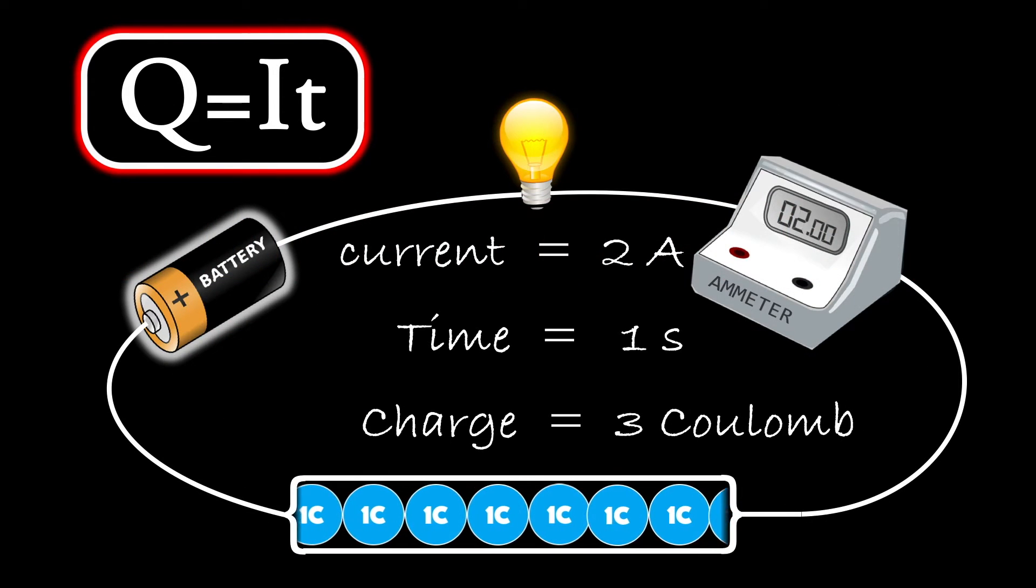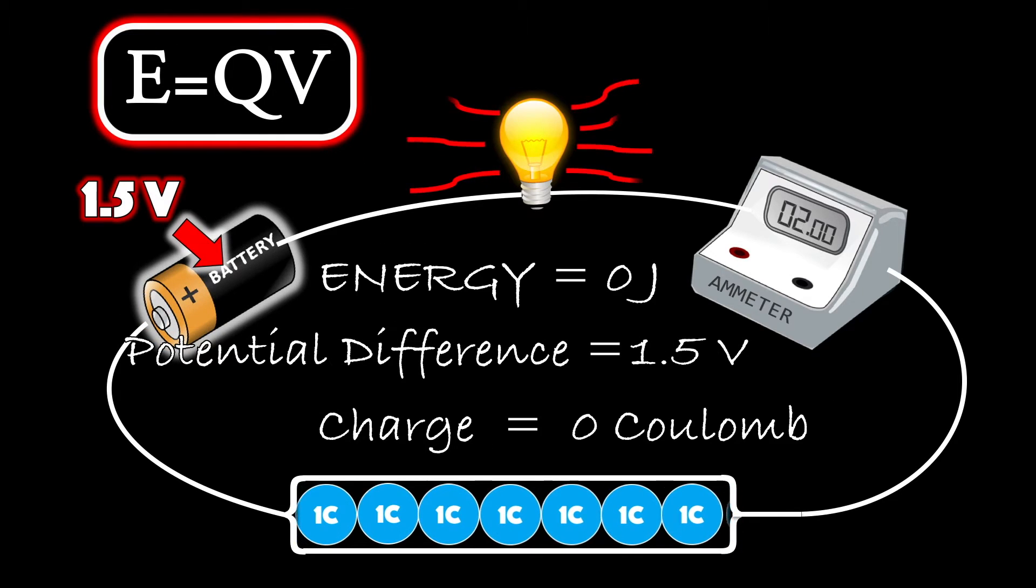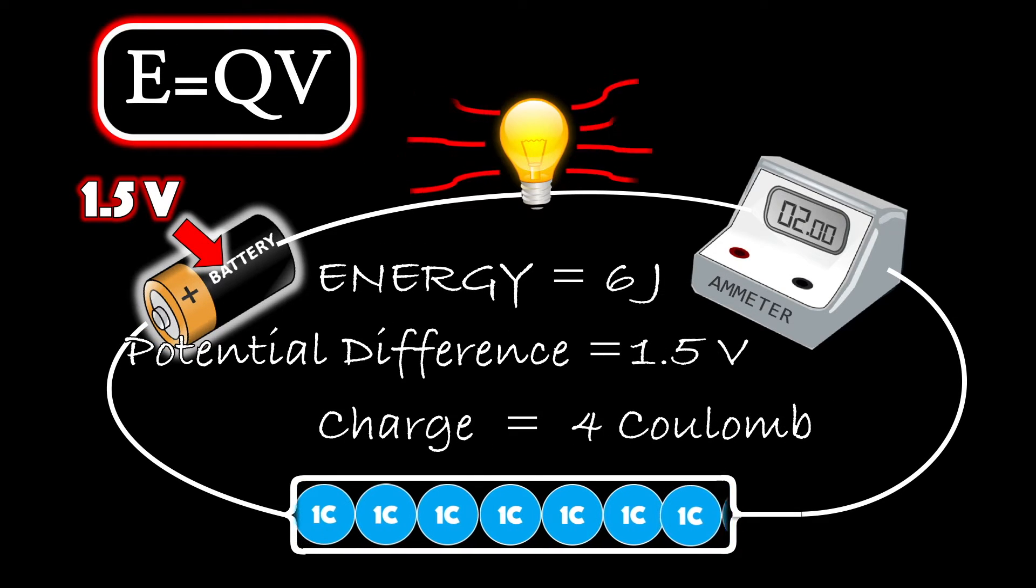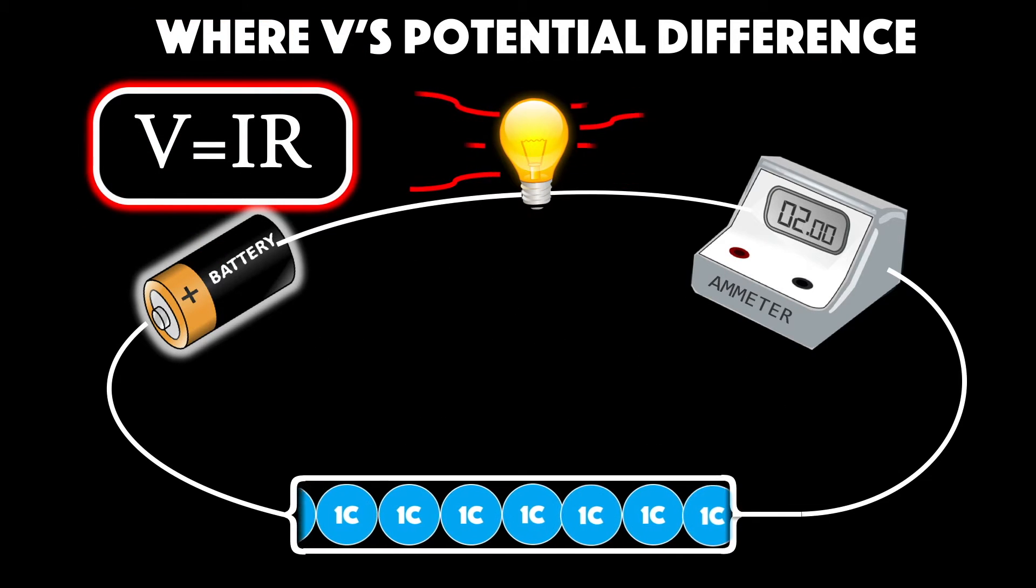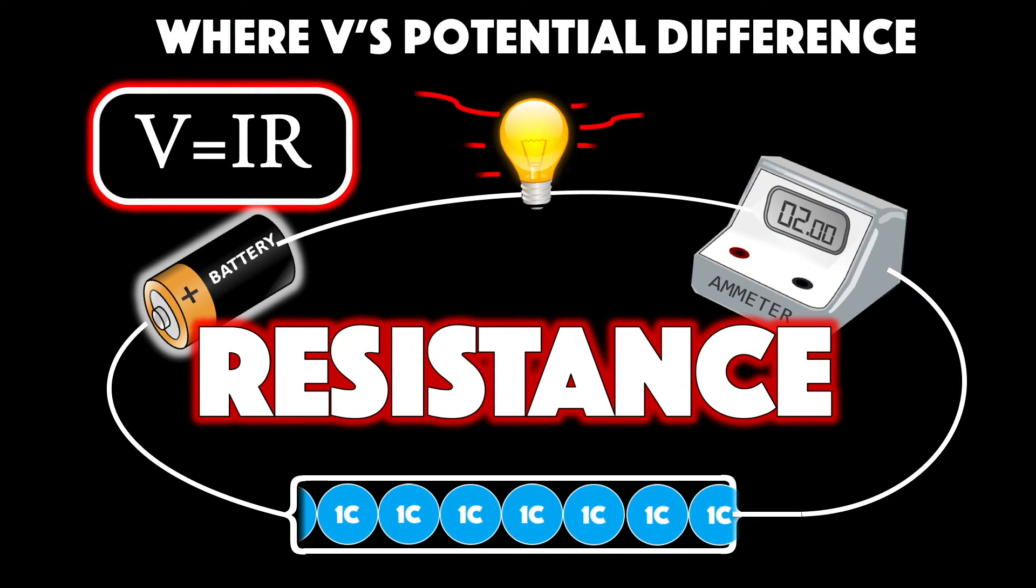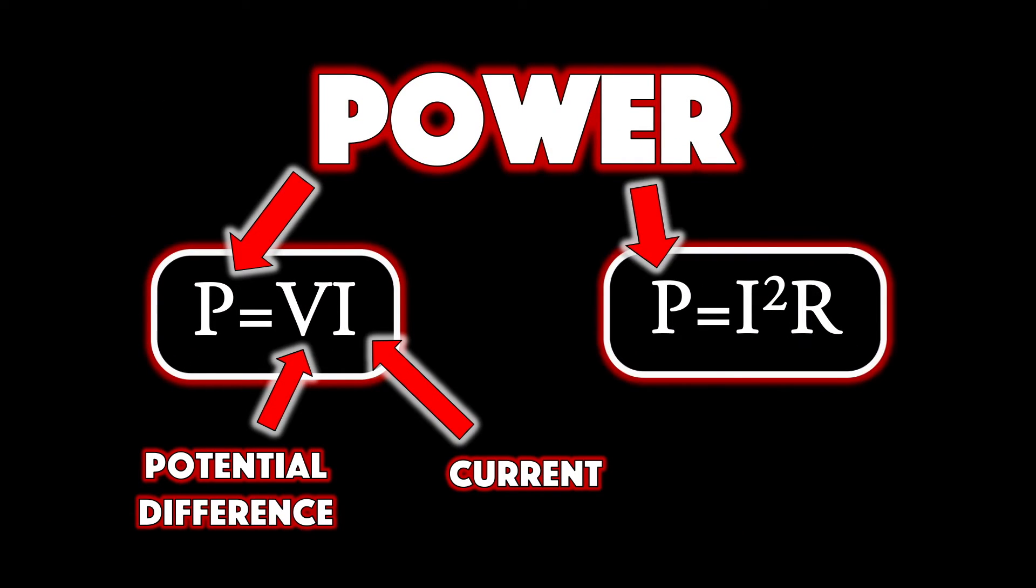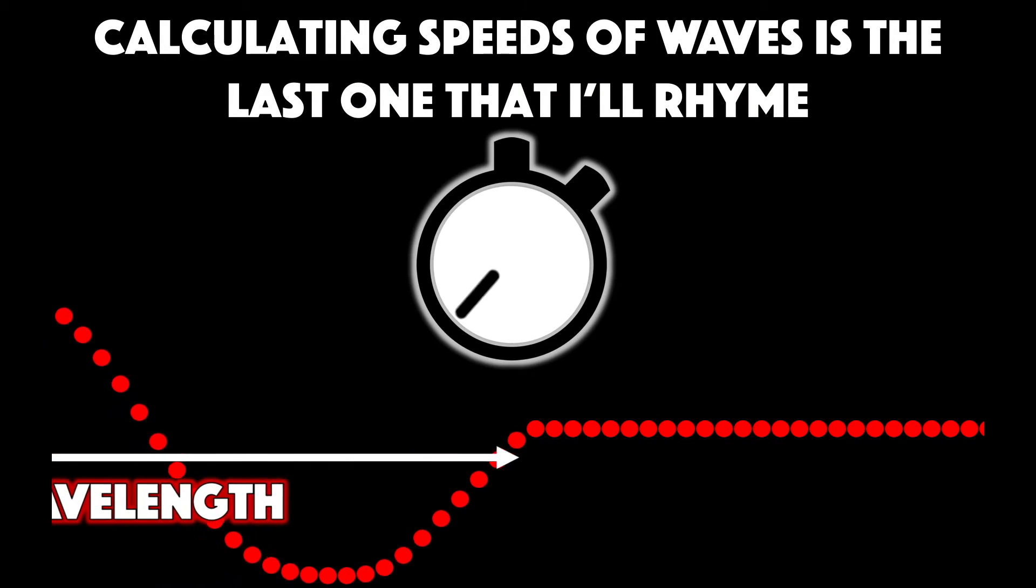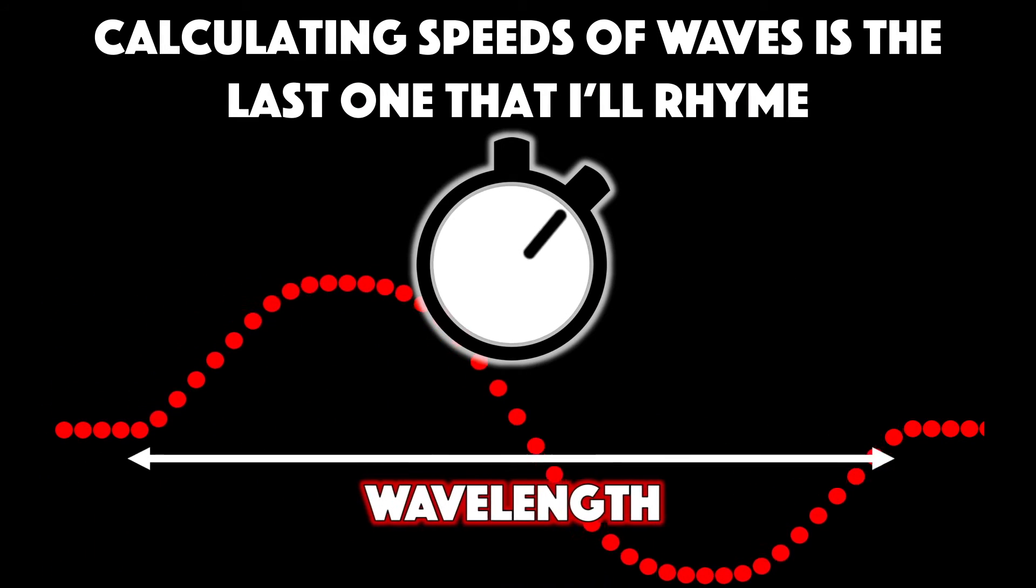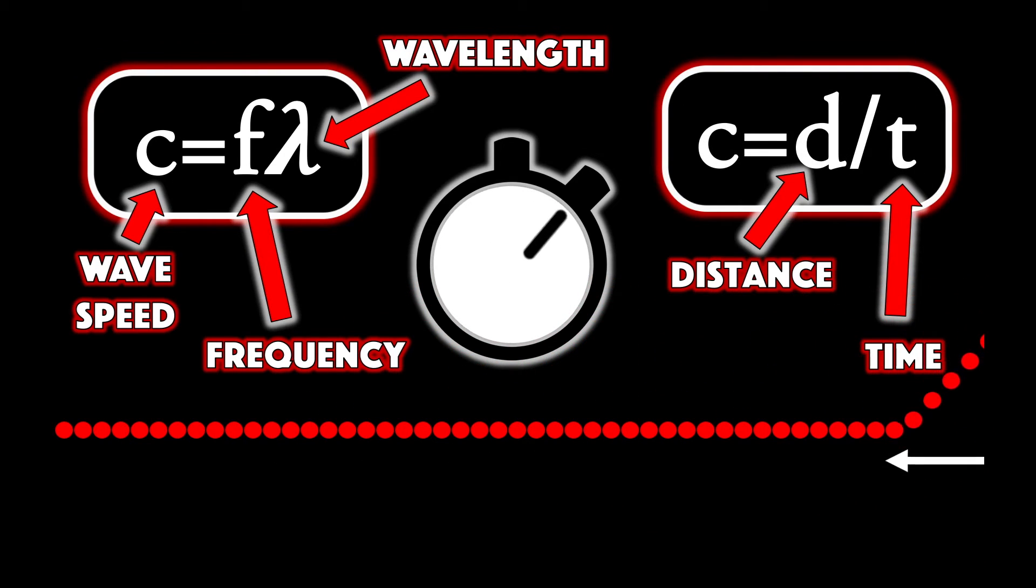Electric charge is current times by time, Q equals It. And the energy transferred is E, which equals Q times V. Where V's potential difference and it equals I times R resistance. So power P is I times V and also I squared R. Calculating speeds of waves is the last one that I'll rhyme. It's frequency times wavelength or the distance over time.